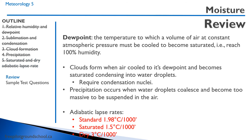To summarize: dew point is the temperature to which a volume of air at constant atmospheric pressure must be cooled to become saturated, reaching 100% humidity. Clouds form when air is cooled to its dew point and becomes saturated, condensing into water droplets, and these clouds require condensation nuclei. Precipitation occurs when water droplets coalesce and become too massive to remain suspended. The standard lapse rates are 1.9 to 8 degrees Celsius per 1,000 feet; saturated (wet) is 1.5 degrees Celsius per 1,000 feet, and dry is 3 degrees Celsius per 1,000 feet.